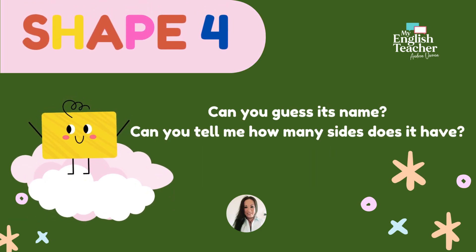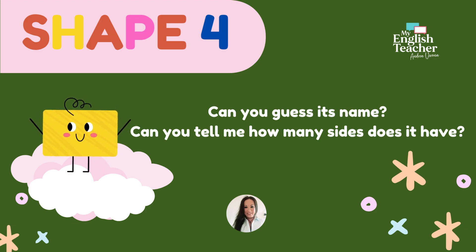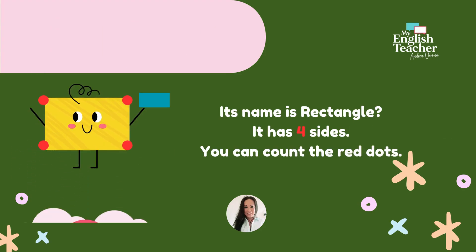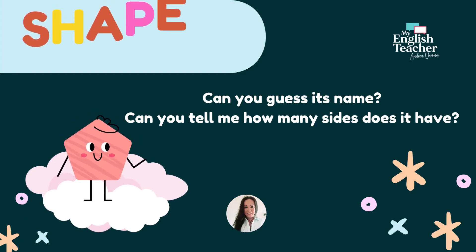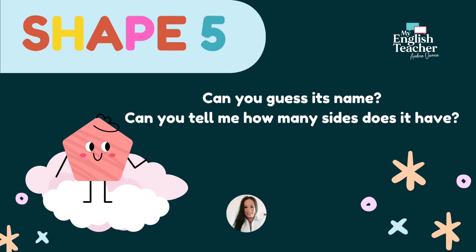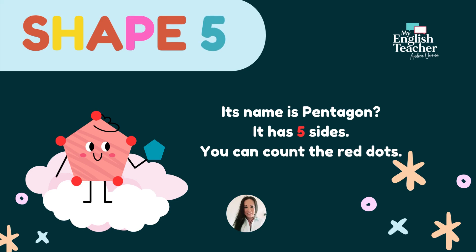Can you guess his name? Can you tell me how many sides does he have? Take your time. Right, let's find out. His name is Pentagon. He has five sides. You can count the red dots.